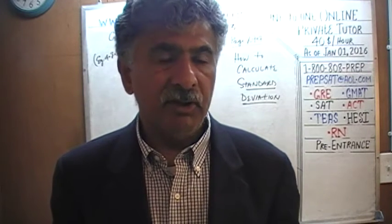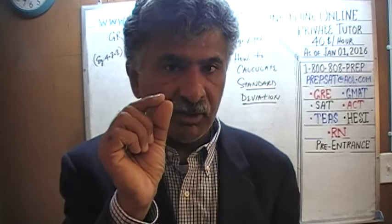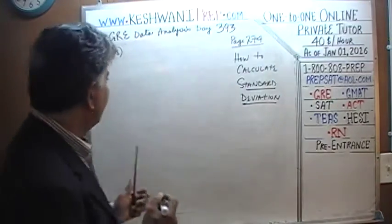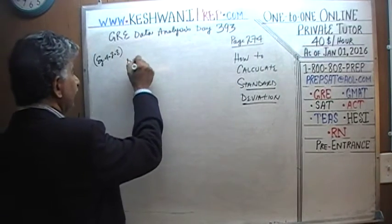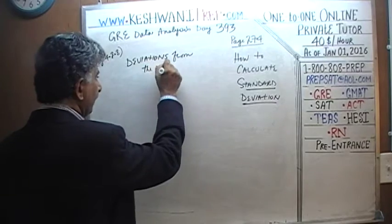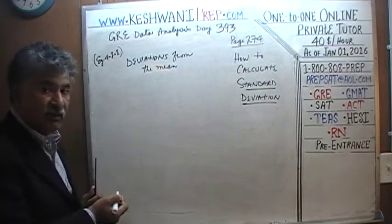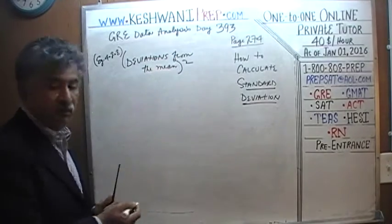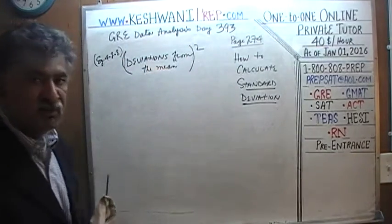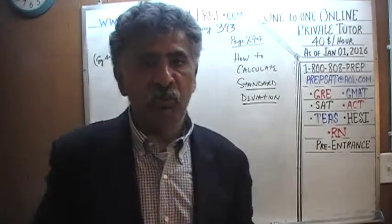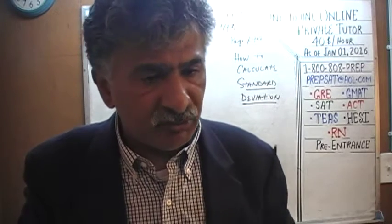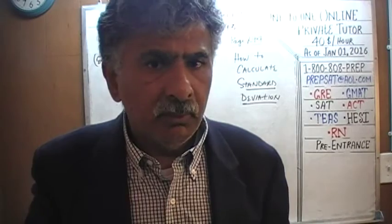Standard deviation involves looking at each single observation and asking how much that observation deviates from the mean. We look at deviations from the mean, and we square each deviation. The question is: why do we square? Why can't we simply add up the deviations? That should give a good idea of how spread out the data is.